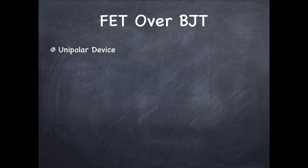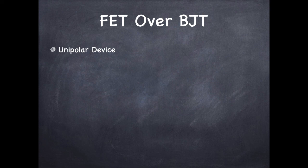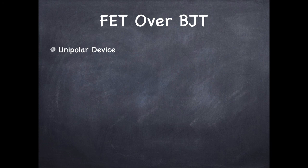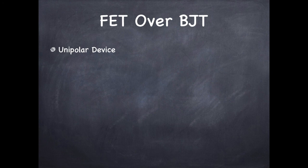BJT is a bipolar device and the prefix BI indicates the conduction level is a function of two charge carriers, electrons and holes. FET is a unipolar device and it depends solely on either electrons or holes.